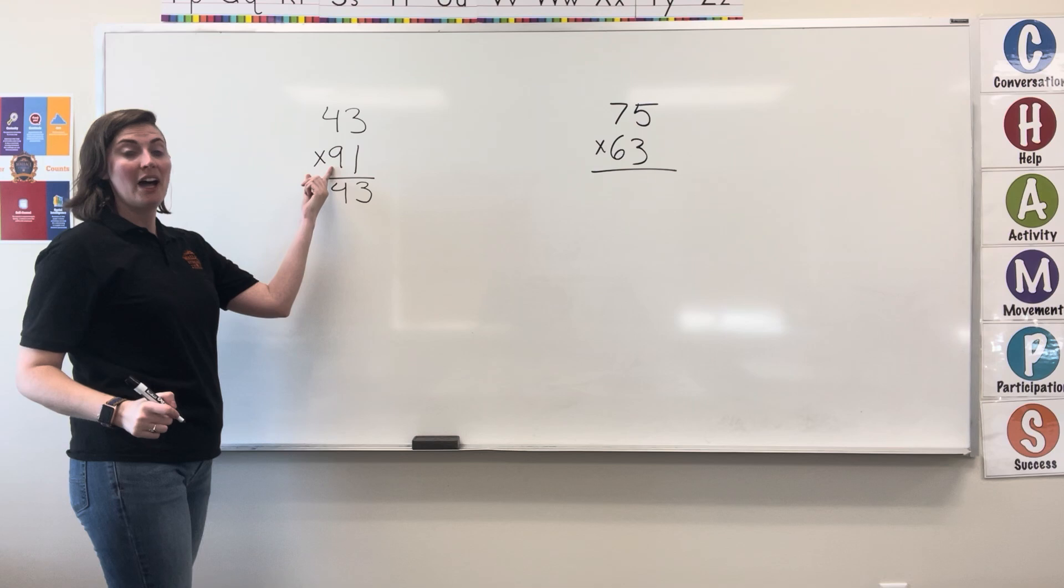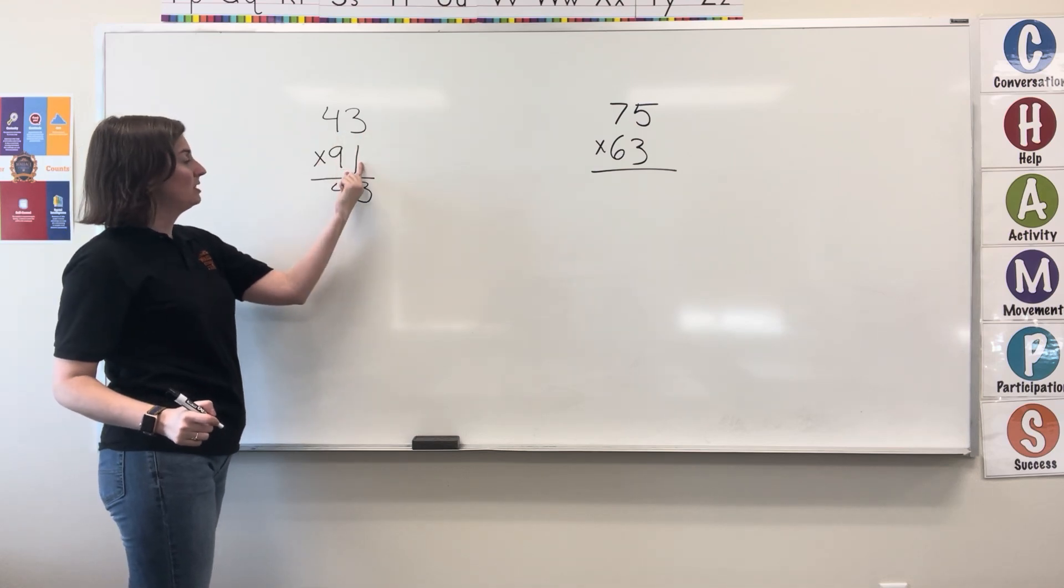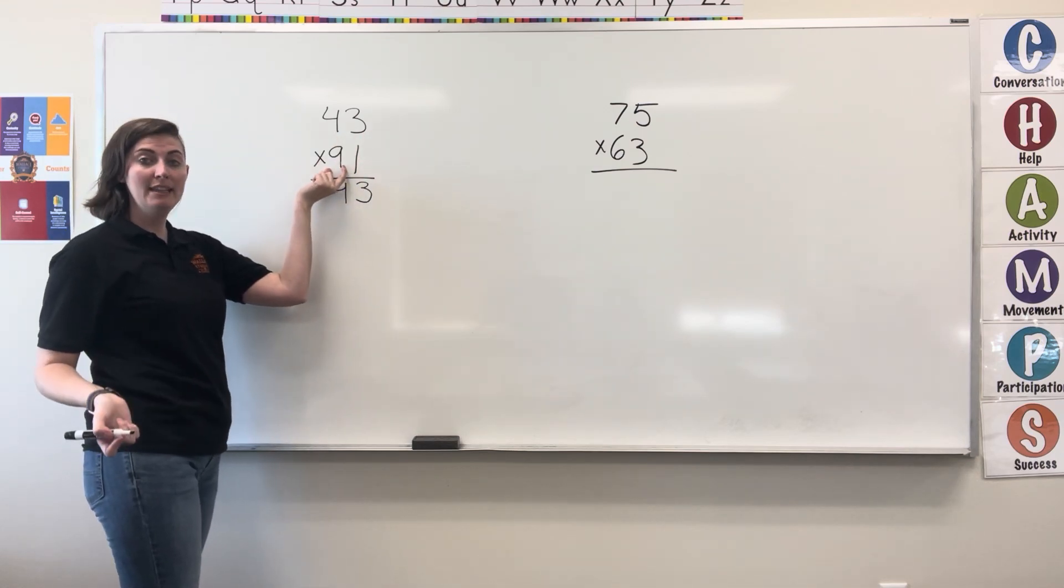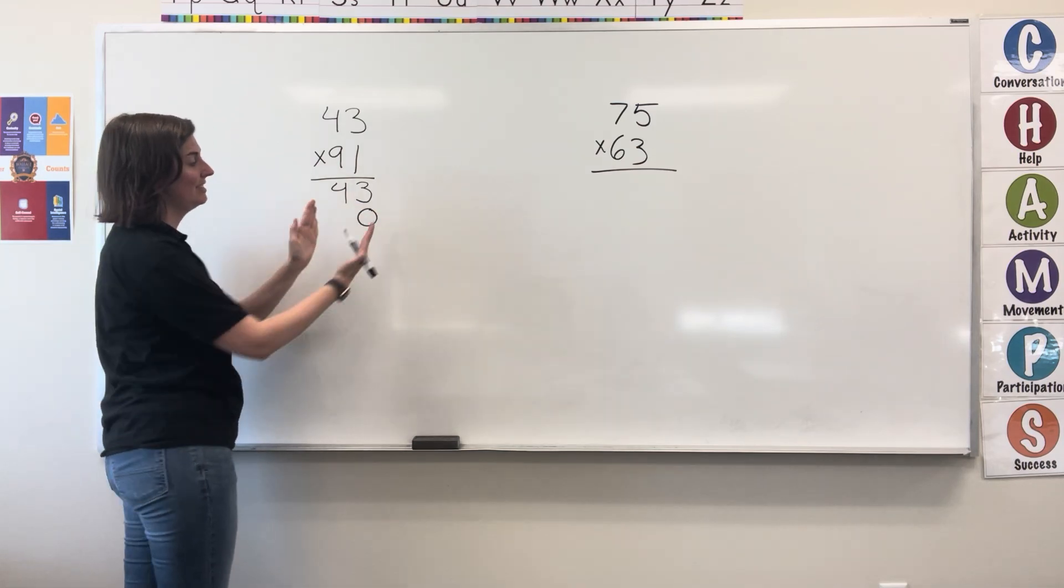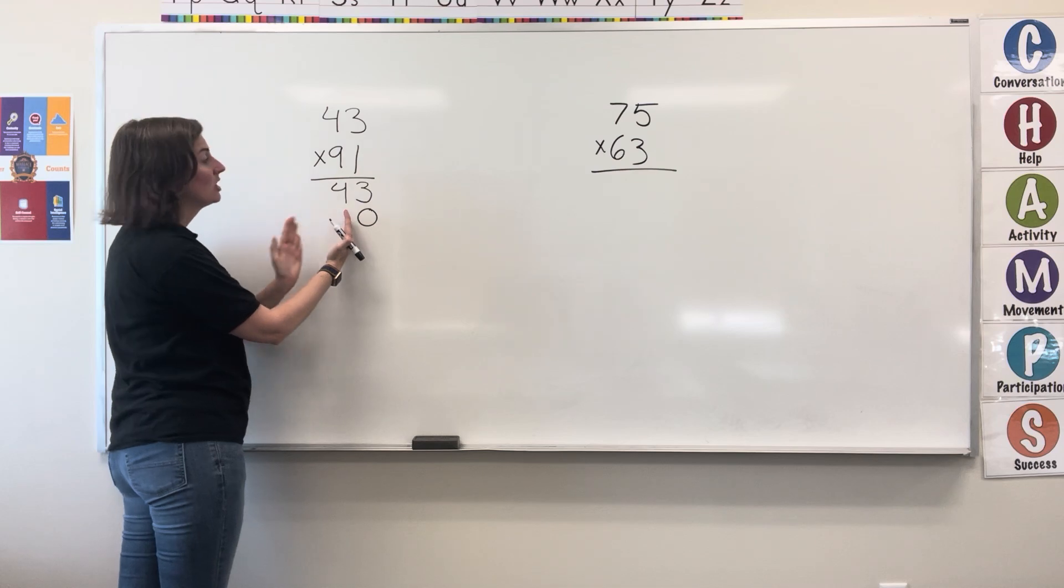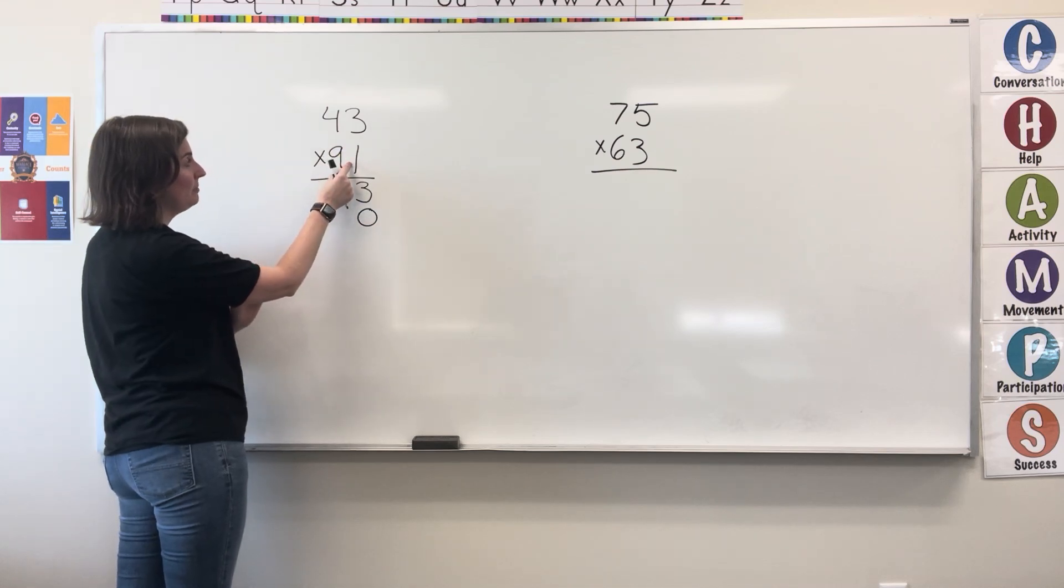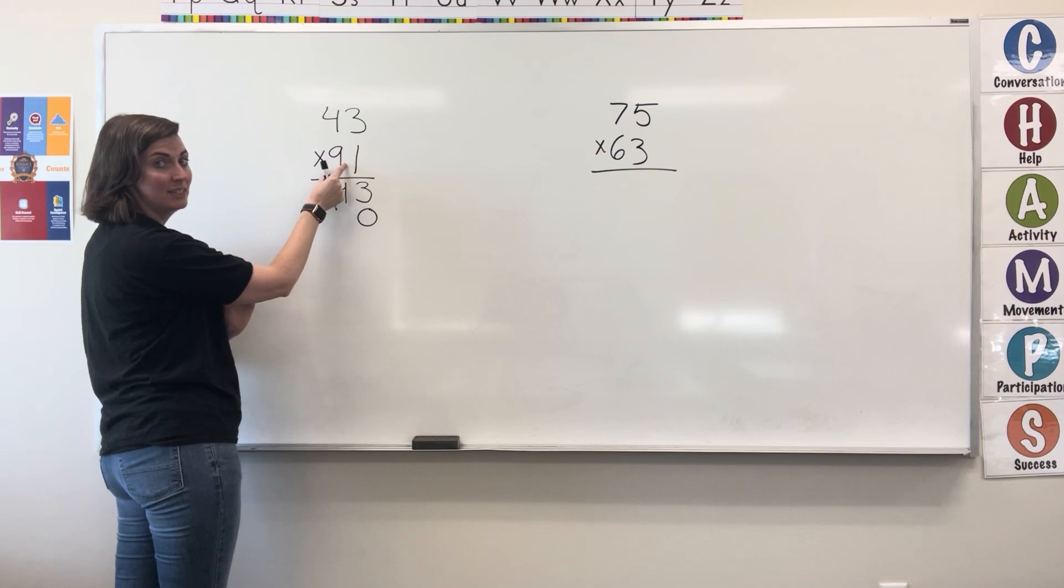Now I've multiplied both digits by this one. I'm moving into the tens place, so I need to put a placeholder here. I'm no longer in the ones, I'm in the tens. So I'm going to take that 9 and do the same thing and multiply both digits by this 9 in the tens place.